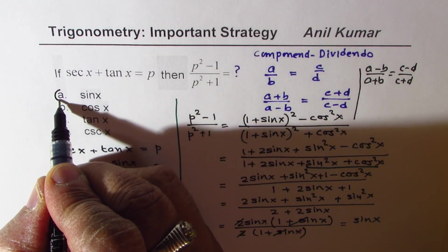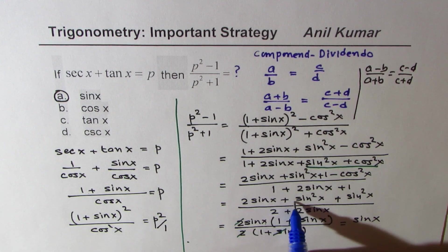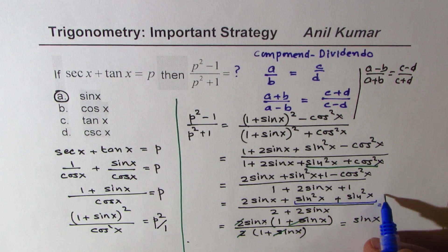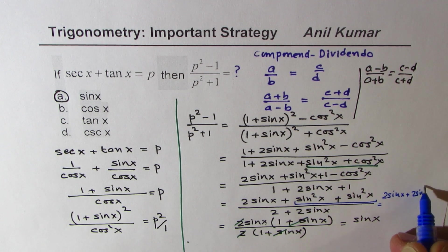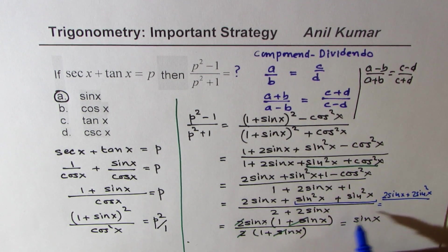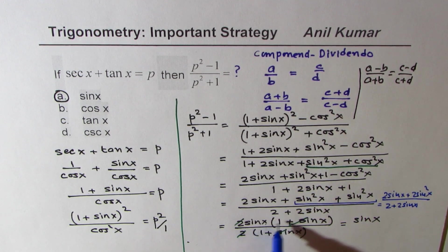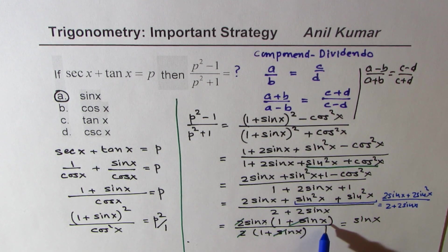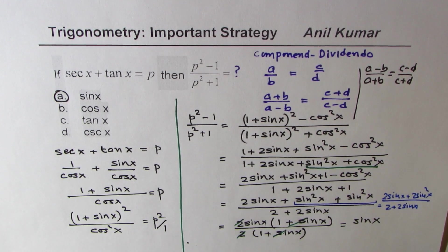The 2 and 2 cancel, and 1 plus sin x in the numerator and denominator cancel, and we get sin x as a result, so option A is the right answer. To summarize: we had 2 sin x plus 2 sin squared x in the numerator over 2 plus 2 sin x in the denominator. Taking 2 sin x common in the numerator gives 1 plus sin x as a factor, which cancels with the denominator, leaving sin x.